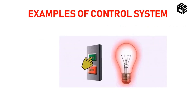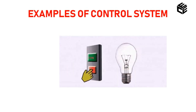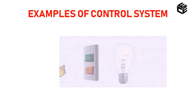Let me share some examples of a control system. A lamp is controlled with the help of a switch. The switch has two positions, on and off. When you press on, it is glowing, and when you press off, it is not glowing. This is a control system.